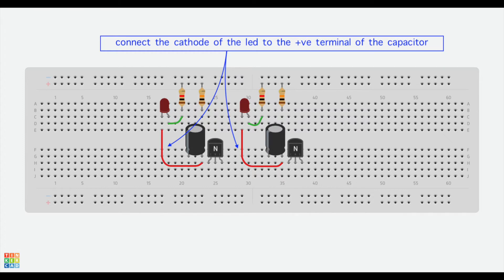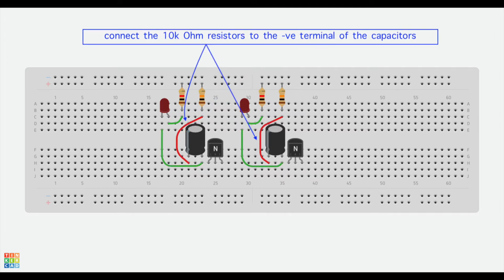Now connect the cathode of the LEDs to the positive terminal of the capacitor. As shown in the figure, connect the 10kΩ resistors to the negative terminal of the capacitor.